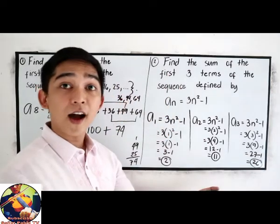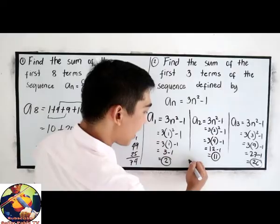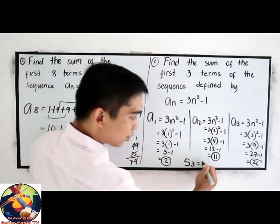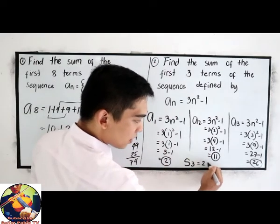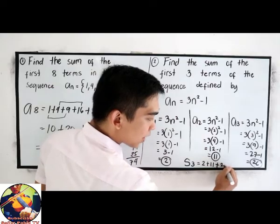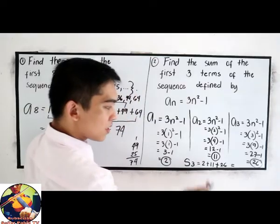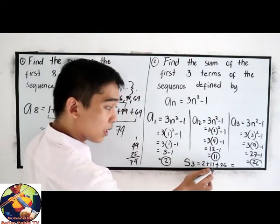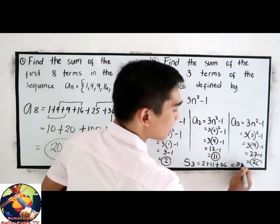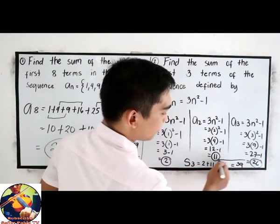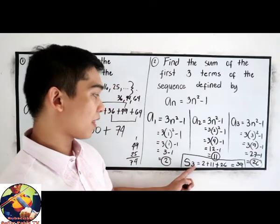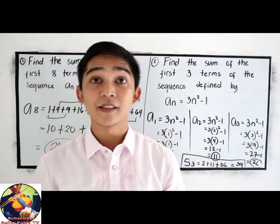Now let us find S3. So S3 is the first term plus the second term plus the third term: 2 plus 11 plus 26. That is 2 plus 11 equals 13, plus 26 equals 39. So the sum of the first three terms is 39.